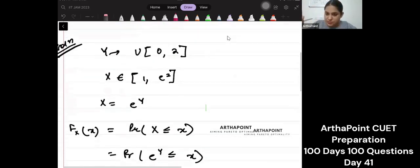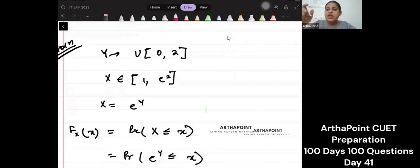That means whenever you have to find out CDF you want the probability that this is less than equal to some number. We take that number as x small x. So we want capital X is less than equal to some number which is small x.